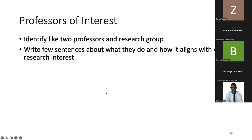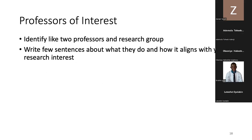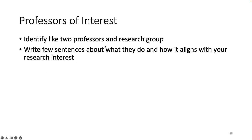You have to tell us which professors you are interested in, if you are applying to a master's or PhD program in the US or Canada. Make sure you highlight about two professors and research groups. Write a few sentences about what they do and how it aligns with your research interests.